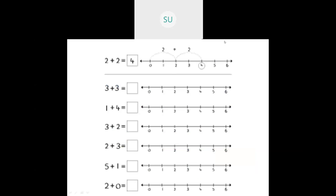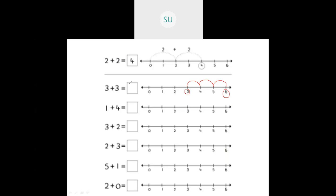Let's see various problems on addition using number line. Here we have 2 plus 2 equals 4. We mark 2 first, then count 2 steps — 1, 2. Then we have 3 plus 3. We circle 3 first, then count 3 steps — 1, 2, 3. So what number did we reach? We reached 6. So 3 plus 3 is 6.